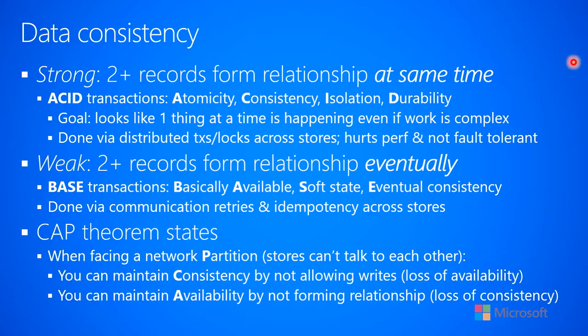Now we're going to talk about data consistency. It's a really important topic when we're talking about high-performance, scalable database storage services. There are two kinds of data consistency. There's strong consistency — this is when two records that form a relationship with each other form that relationship at the same time. Like a customer has an order, and an order also knows who the customer is. That's a relationship between customers and orders. When we talk about strong consistency, we frequently talk about ACID transactions.